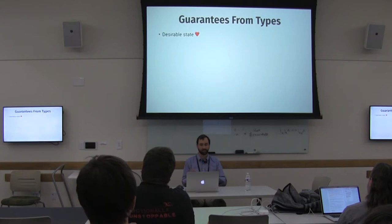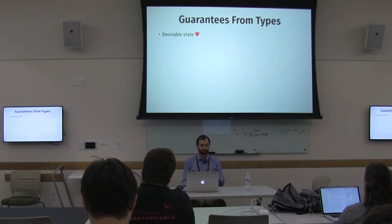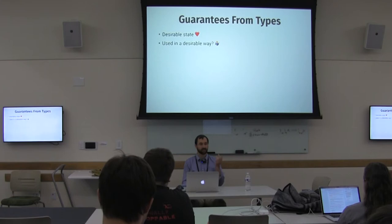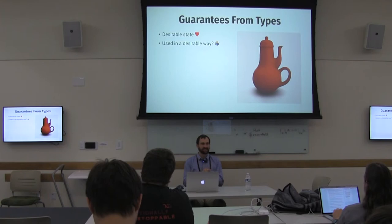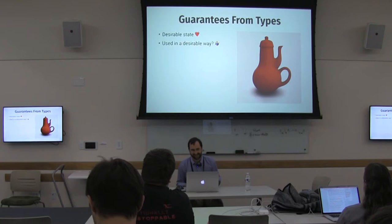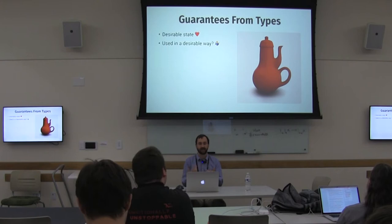That's great. But this talk really explores the question: can we also get guarantees from the type system that data which is in a nice shape is also used in a desirable way? Maybe we've got some perfectly well-brewed tea, but how do we make sure it's going to be poured correctly? This talk will explore using the type system and API design to guide data to be used correctly.